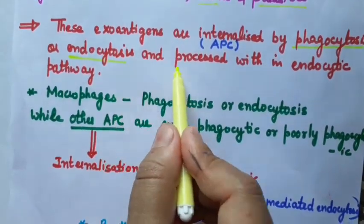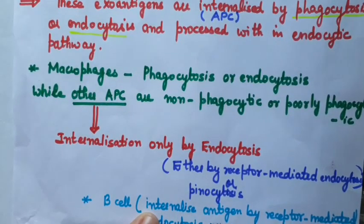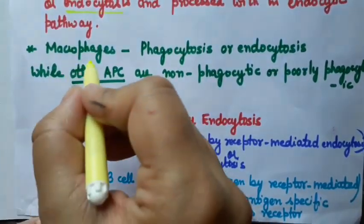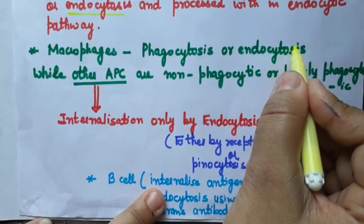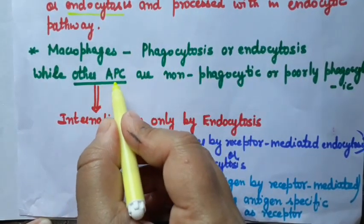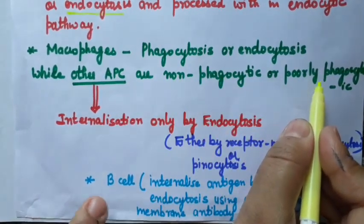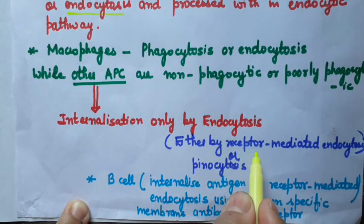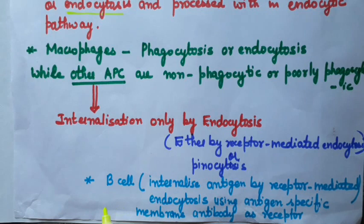These exoantigens are internalized by antigen presenting cells via phagocytosis or endocytosis and processed within the endocytic pathway. Antigen presenting cells are of many types, such as macrophages, B cells, and dendritic cells. In the case of macrophages, phagocytosis or endocytosis helps in the internalization of antigens, while other antigen presenting cells are mostly non-phagocytic or poorly phagocytic, so internalization takes place by endocytosis — receptor-mediated endocytosis or pinocytosis.